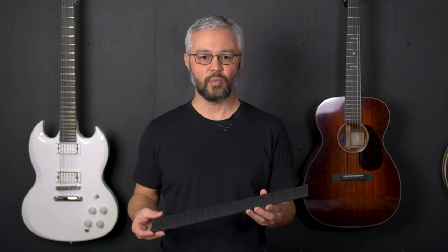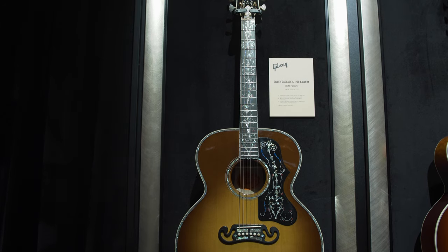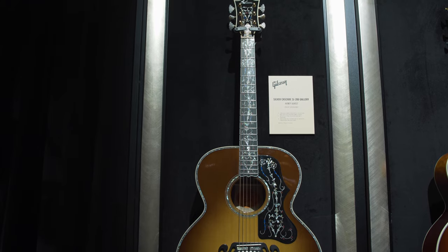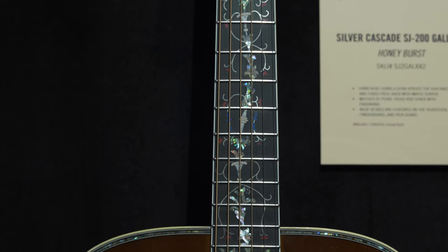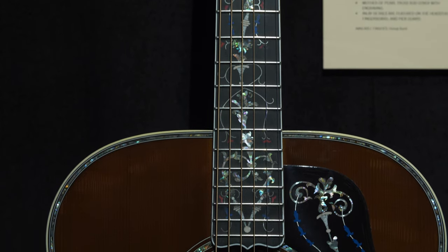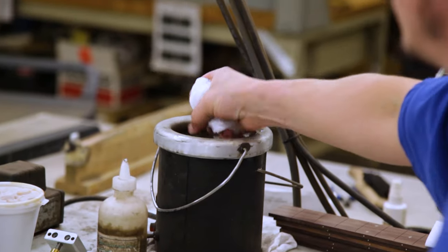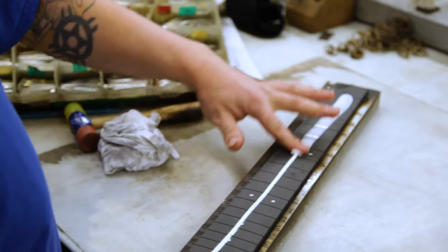One of the questions we get asked often is why would you use Richlight over ebony? Richlight is effectively superior to ebony in every way. The material is more consistent, it's the same exact density, it does not shrink, and on a manufacturing side you get 100% yield, so there is very little waste in your product manufacturing.